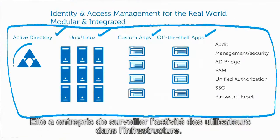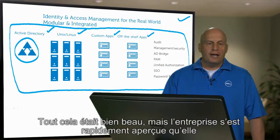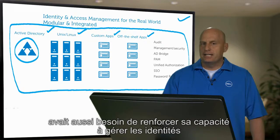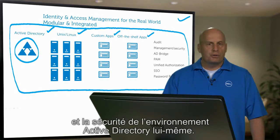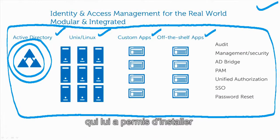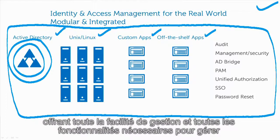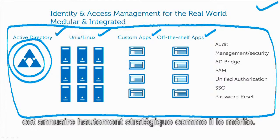First off, they did user activity monitoring on the framework — the ability to watch what users are doing, track changes, and report on those changes. But they quickly realized they also needed the ability to better manage the identities and the security of Active Directory itself. They came back and added an Active Directory security and management solution that allowed them to put what we would call a virtual firewall around Active Directory, giving all the manageability and functionality necessary to manage that most important directory in the way that it deserves.